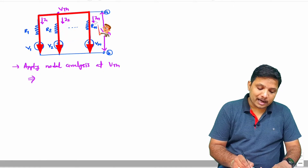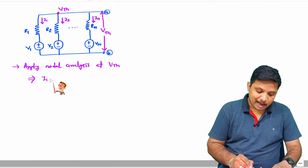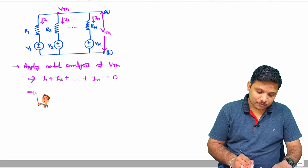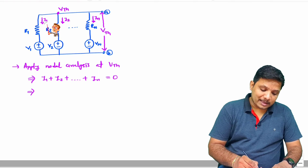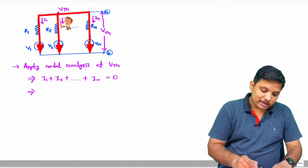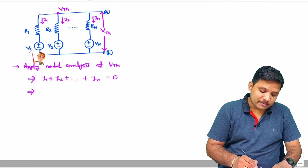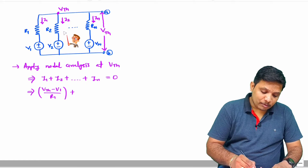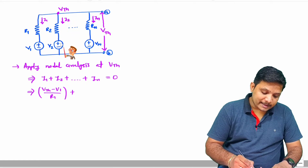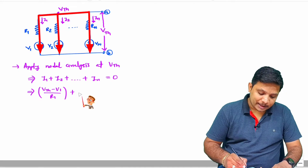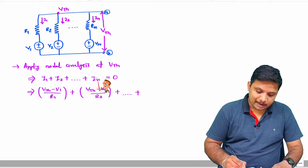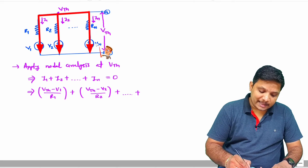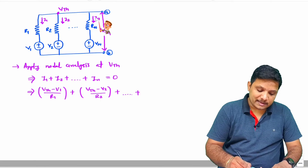If you observe here, all the currents are leaving currents. So I can say I1 plus I2 plus up to In equals 0. Now, what is the value of I1? I1 is tail voltage minus head voltage, so that is Vth minus V1 divided by resistance R1. I2 is Vth minus V2 divided by R2. And In is Vth minus Vn divided by Rn.